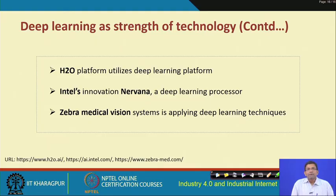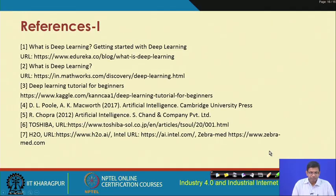Other examples include the H2O platform using deep learning, Intel Nervana as a deep learning processor, and Zebra Medical Vision using deep learning techniques for medical domain problems. Deep learning has become very popular in autonomous driving vehicles, where deep learning along with IoT makes self-driving cars a reality. There are many different utilities of machine learning, deep learning, and artificial intelligence working hand-in-hand with IoT and IIoT, making them powerful together in addition to their individual strengths.